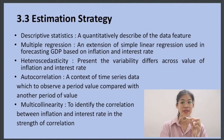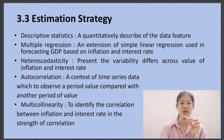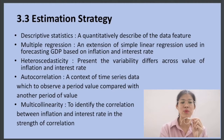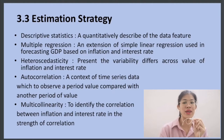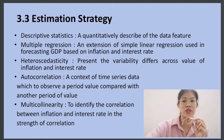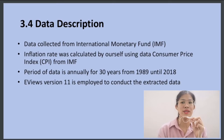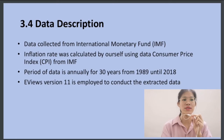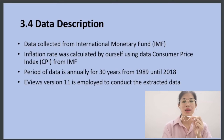Descriptive statistics is a quantitative description of the data features. Multiple regression is an extension of simple linear regression used in forecasting GDP based on inflation and interest rate. Heteroskedasticity presents the variability differing across values of inflation and interest rate. Autocorrelation in a context of time series data observes a period value compared with another period. Multicollinearity identifies the correlation between inflation and interest rate and the strength of correlation. Data was collected from the International Monetary Fund (IMF). Inflation rate was calculated using the Consumer Price Index (CPI) from IMF. The period of data is annually, 30 years from 1989 until 2018. EViews version 11 is employed to conduct the extracted data.